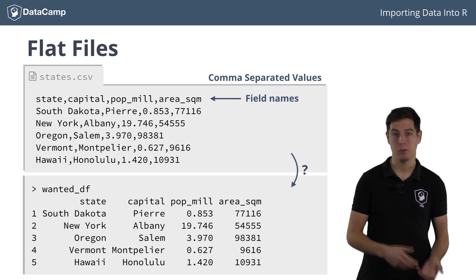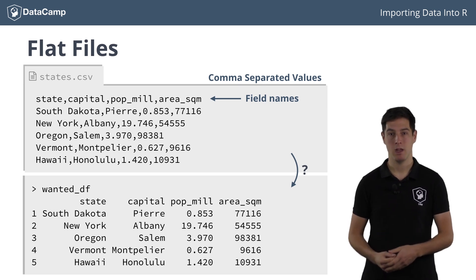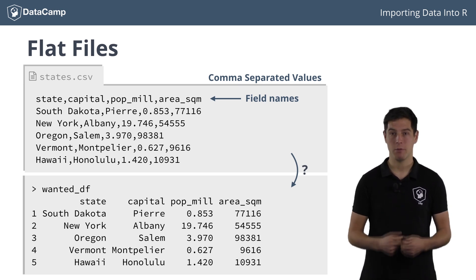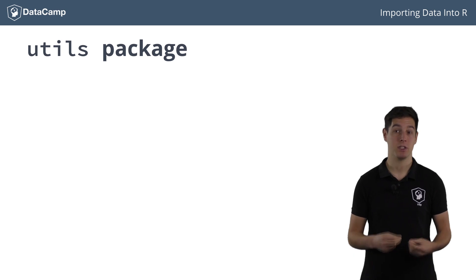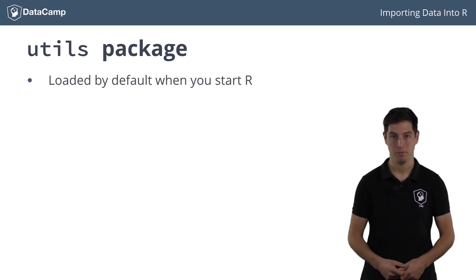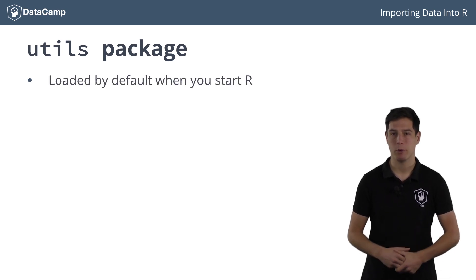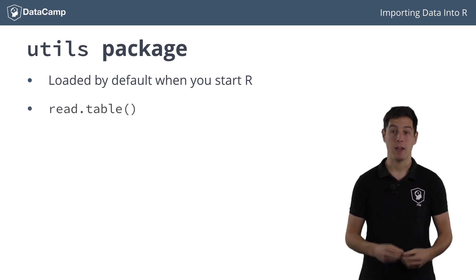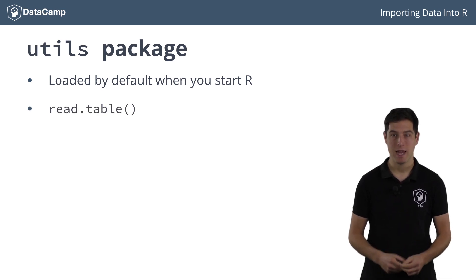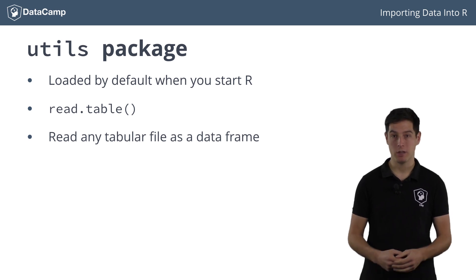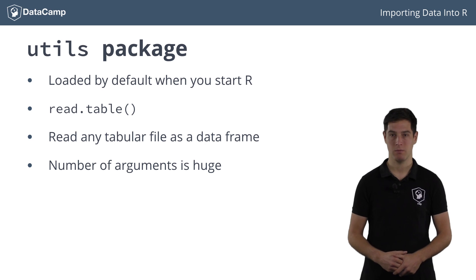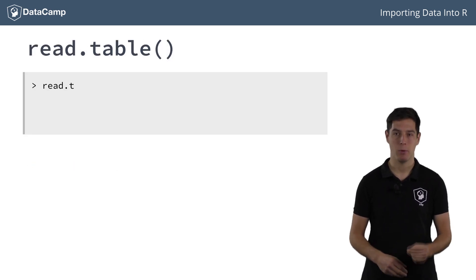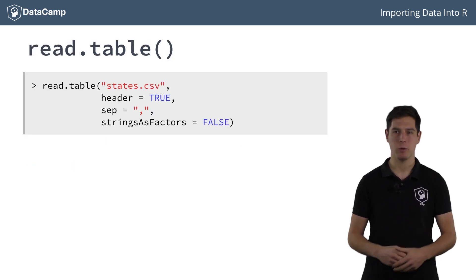But how to go from the CSV file to this data frame? We're in luck, because the standard distribution of R provides functionality to import these flat files into R as a data frame. These functions belong to the utils package, which is loaded by default when you start R. The mother of all these data import functions is the read.table function. You can read in any file in table format and create a data frame from it. The number of arguments you can specify is huge, so let's have a look at the read.table call that imports states.csv and try to understand what happens.